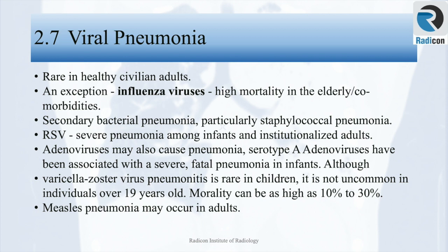In lower respiratory tract illnesses, in addition to bronchitis and bronchiolitis, viral pneumonias can happen. These are rare in healthy individuals; however, influenza viruses can be an exception with high mortality in elderly with comorbidities. Secondary bacterial pneumonia, particularly staphylococcal pneumonias, can occur. RSV can cause severe pneumonia among infants and institutionalized adults. Adenoviruses may also cause pneumonias, with serotype A adenoviruses associated with severe fatal pneumonia in infants. Varicella zoster virus pneumonitis is rare in children but not uncommon in individuals over 19, with mortality as high as 10–30%.